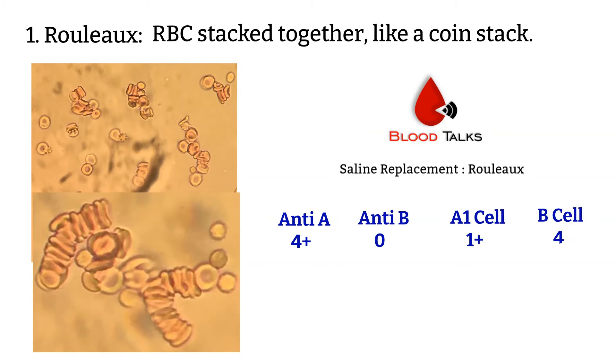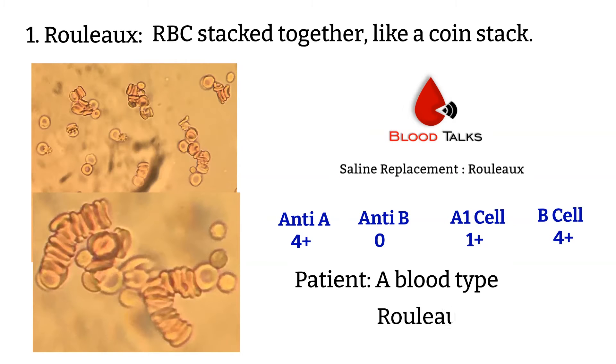In this case, you can report that the patient is blood type A, and it would be wise to enter in the comment section that Rouleaux was observed.